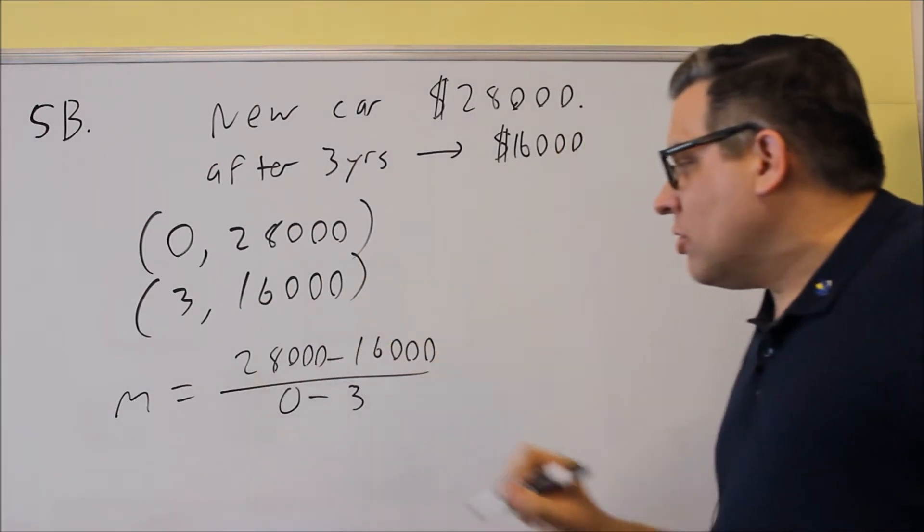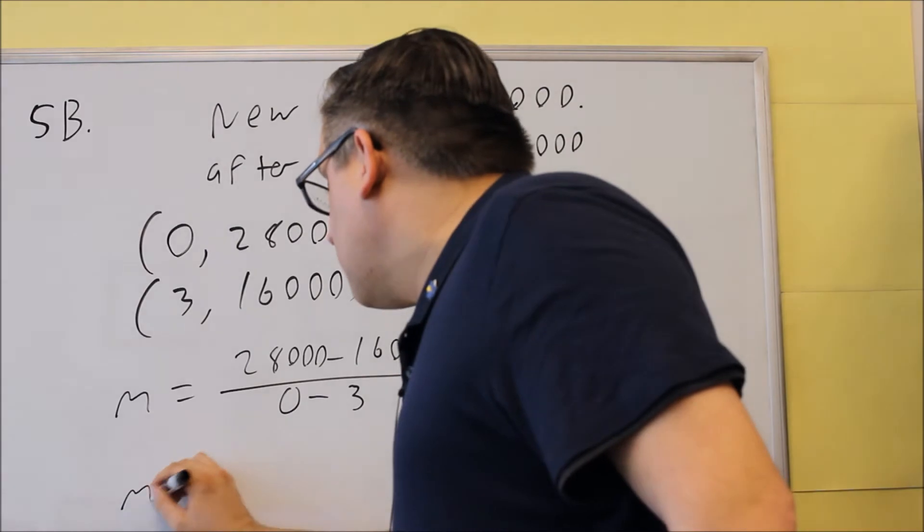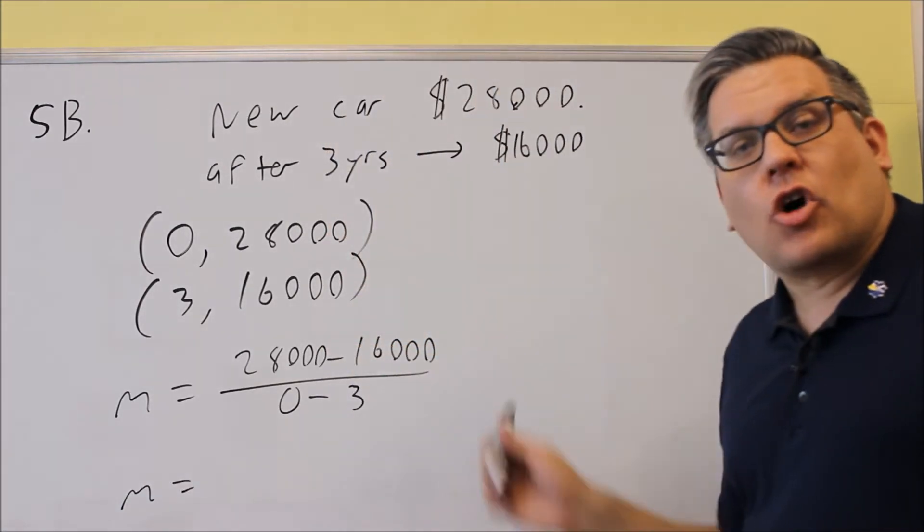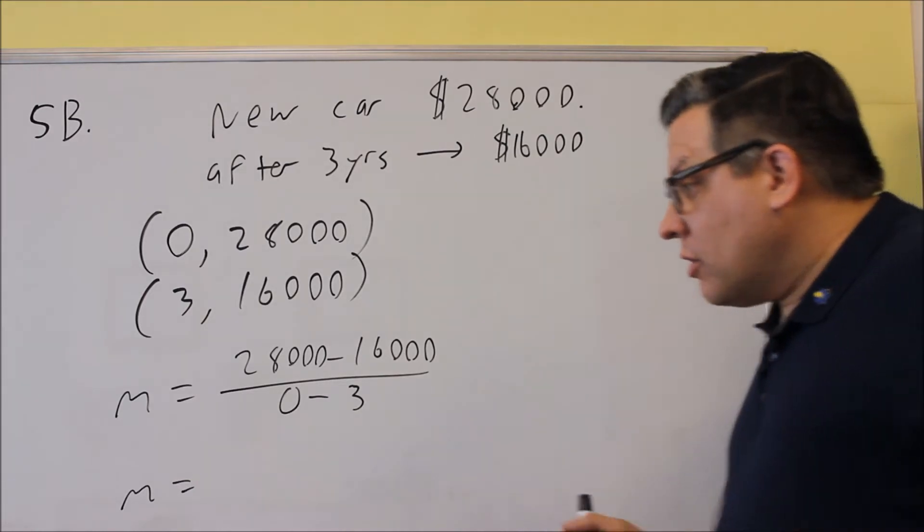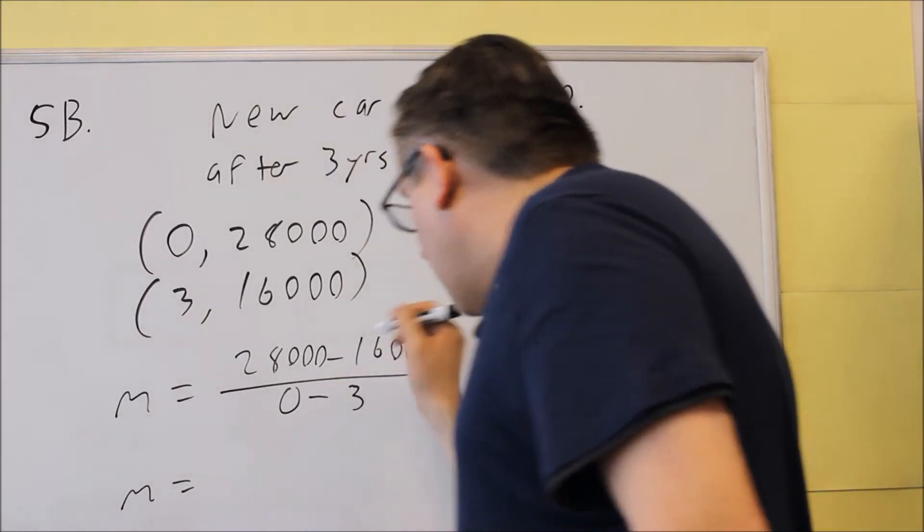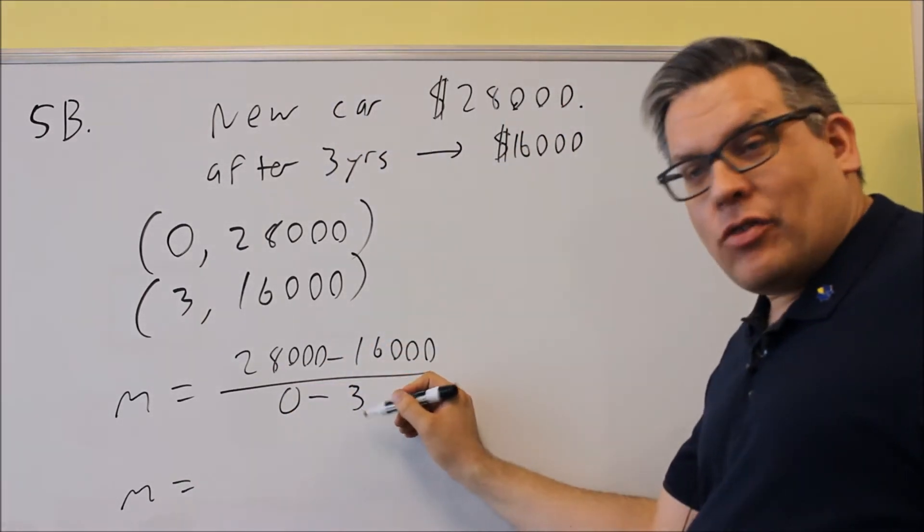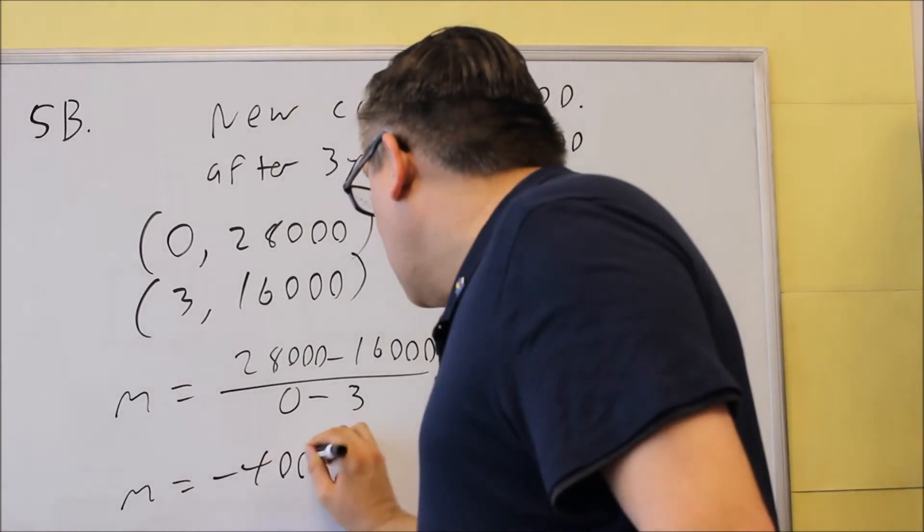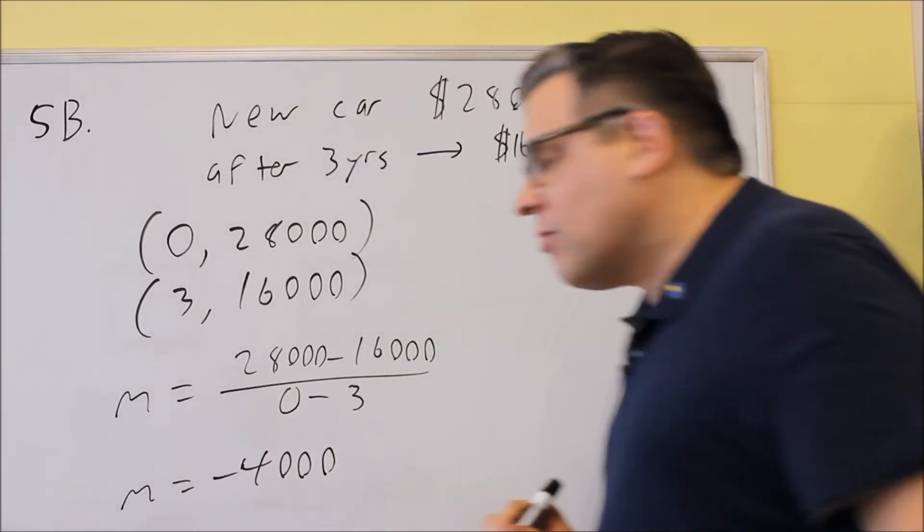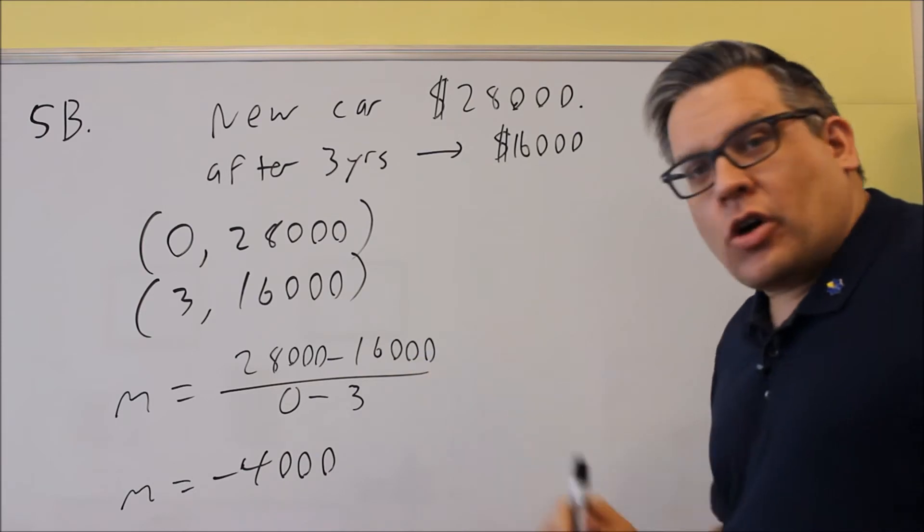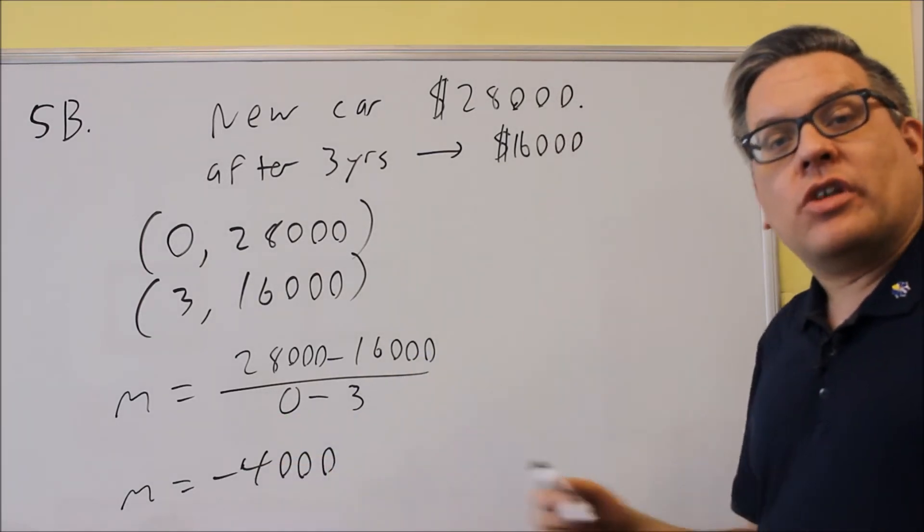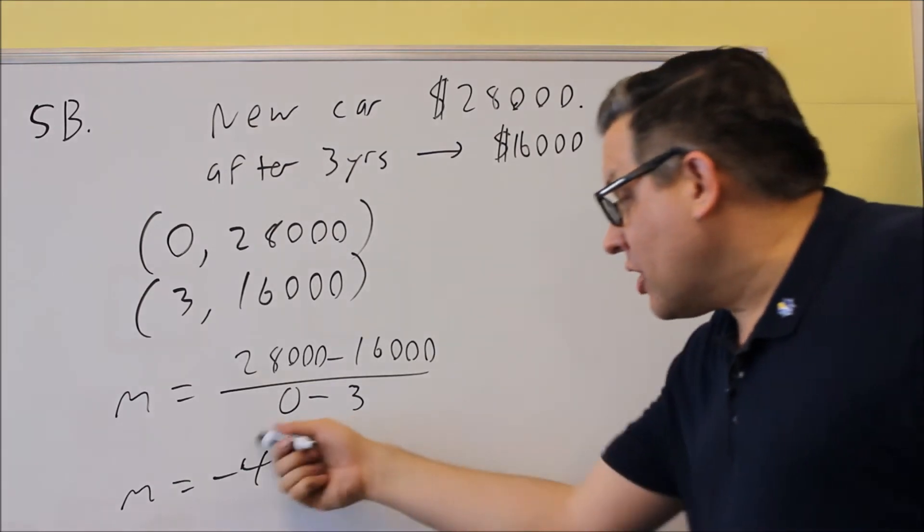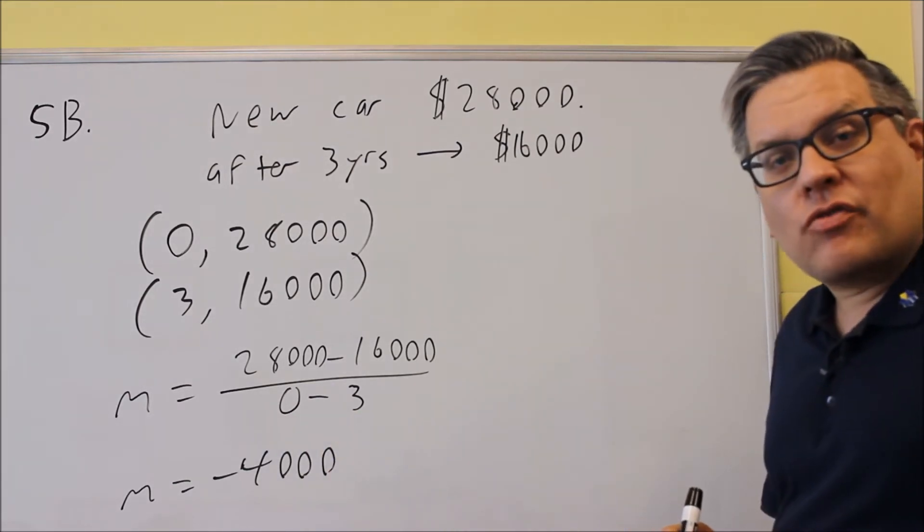This will give me the slope of the line. When we work this out and divide by a negative number, we get negative 4,000. This represents that every single year, the car is losing $4,000 in value. That's the meaning of the slope.